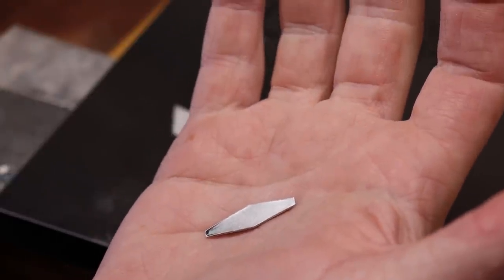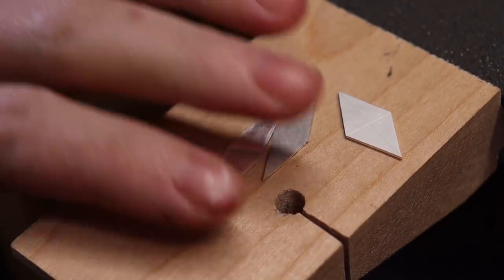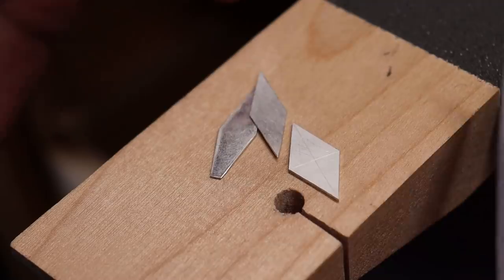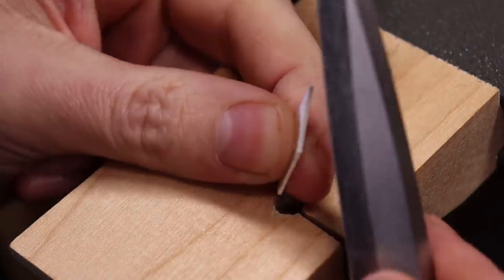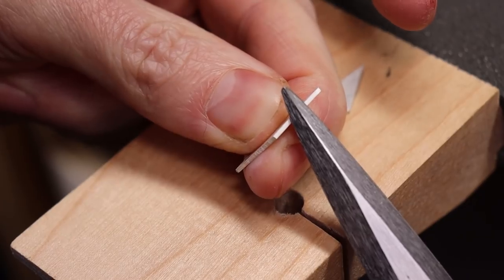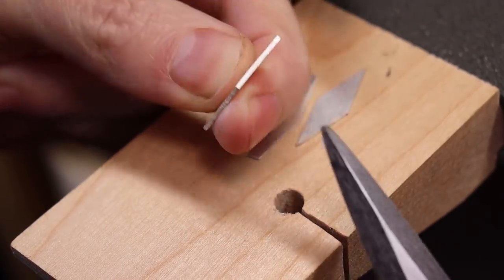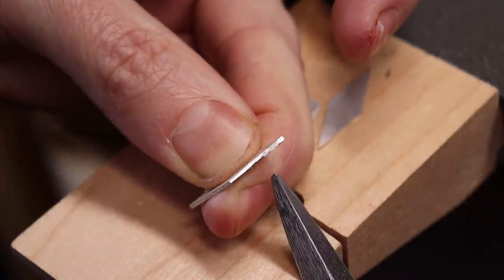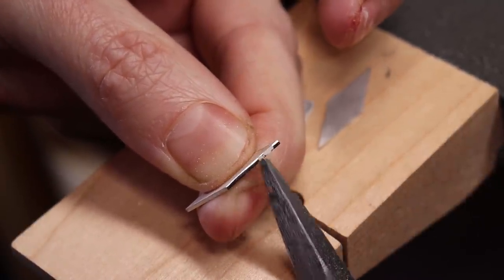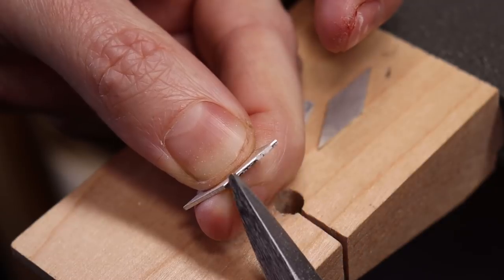All right, so once we get these to our liking, you want to clean up the edges before we fold them. And you could do that just with a normal file and just go over your edges to clean them up from any saw marks or any type of weird little burrs or anything. And you'll see as you're going the low spots and high spots and you want it to be all uniform.